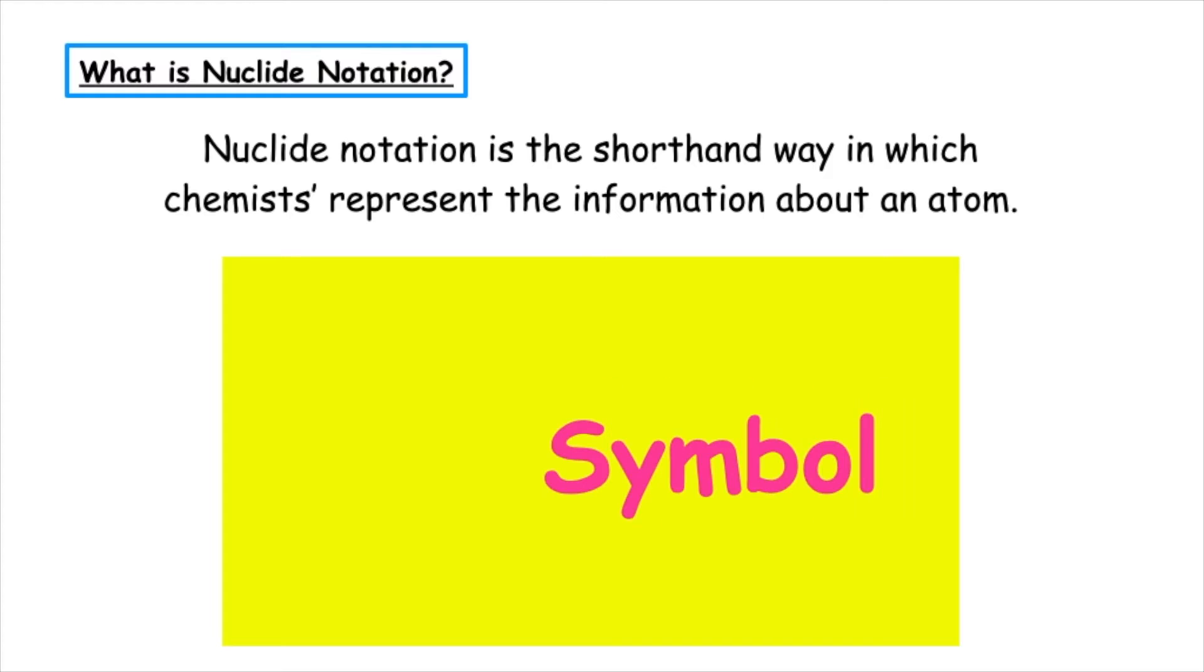We find the chemical symbol on page 6 of the data booklet, and the position of this element is known as the atomic number, which can also be found on page 6, which is equal to the number of protons which are found inside the nucleus.